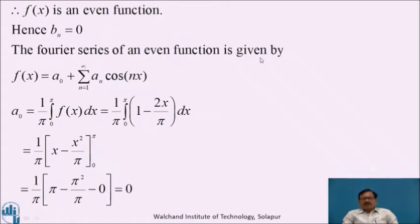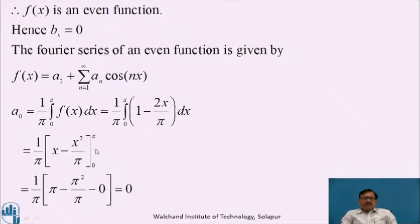The Fourier series of an even function is given by f(x) = a₀ + summation from n=1 to infinity of aₙ cos(nx), where a₀ = (1/π) ∫₀^π f(x) dx = (1/π) ∫₀^π (1 − 2x/π) dx. Integrating: (1/π)[x − x²/π] from 0 to π. Putting x = π: π − π²/π = π − π = 0. For lower limit both terms are zero, therefore a₀ = 0.